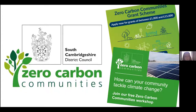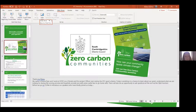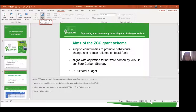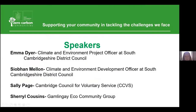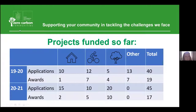The Zero Carbon Communities Grant Scheme aims to: support communities to promote behavioural change and reduce reliance on fossil fuels; align with our aspiration for net zero carbon by 2050 in our zero carbon strategy; and has a £100,000 total budget. Looking at funded projects so far, 40 applications were received in the first year, slightly more in the second year, and funding has been awarded to a total of 36 projects.